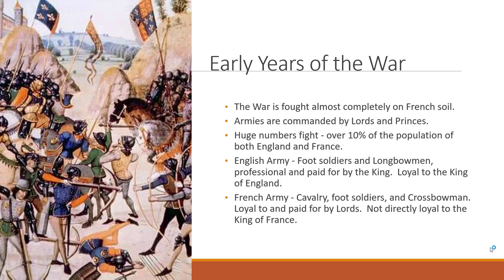The French government passed a law saying the throne could not pass through the female line. Edward felt cheated and decided to fight for the French throne he believed was rightfully his. The war was almost completely fought on French soil. Both English and French armies were commanded by lords and princes under the feudal system, and over 10% of the population of both countries fought. Pre-plague England had about 4 million people and France about 16 million.